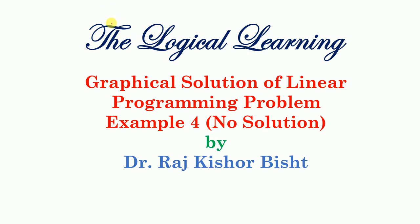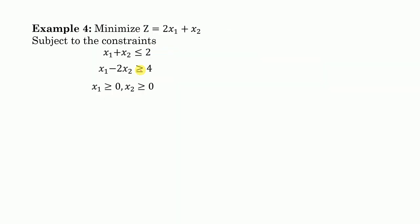Welcome everyone to the Logical Learning platform. In this lecture we will discuss the graphical solution of a linear programming problem with no solution. We have to minimize z = 2x1 + x2, with constraints: x1 + x2 ≤ 2 and x1 - 2x2 ≥ 4.